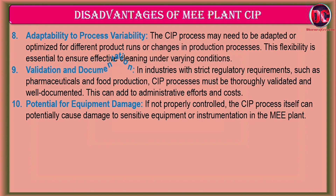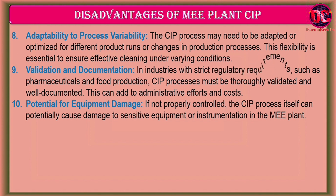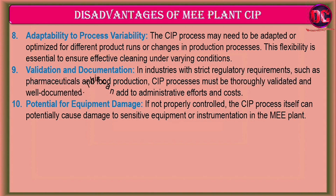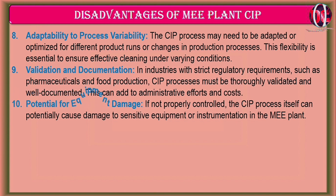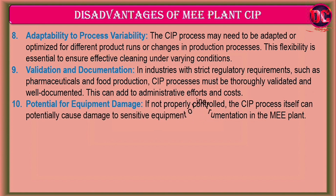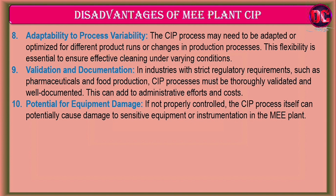9. Validation and Documentation: In industries with strict regulatory requirements, such as pharmaceuticals and food production, CIP processes must be thoroughly validated and well documented. This can add to administrative efforts and costs. 10. Potential for Equipment Damage: If not properly controlled, the CIP process itself can potentially cause damage to sensitive equipment or instrumentation in the MEE plant.